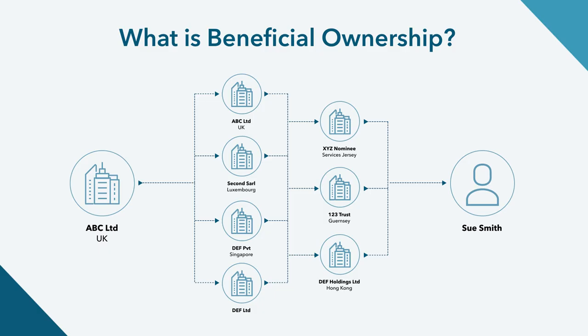Understanding who you are really dealing with is critical to the onboarding and maintenance processes of customers, suppliers and third parties. Anonymity enables multiple illegal activities such as fraud, money laundering, corruption, terrorism financing, and a whole host of other illegal activities.